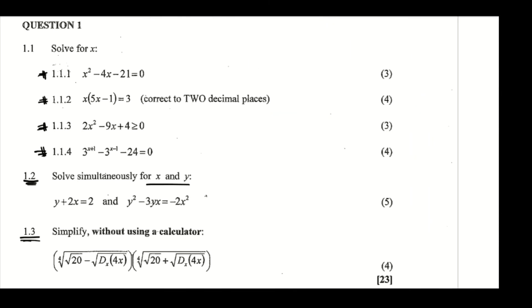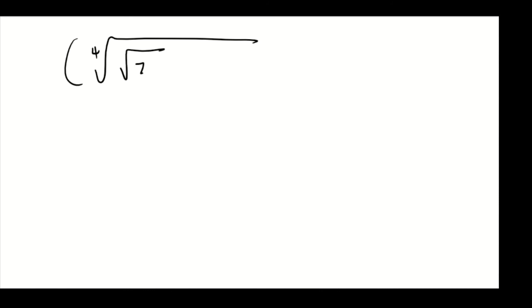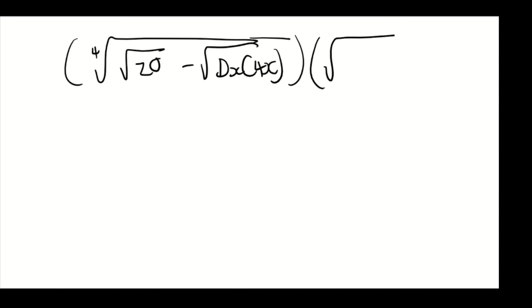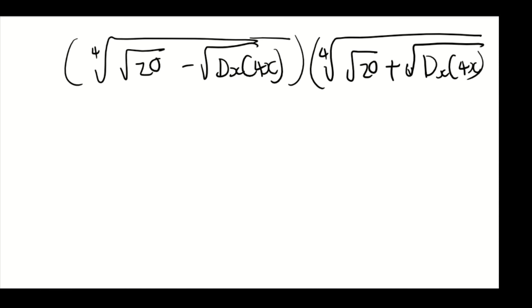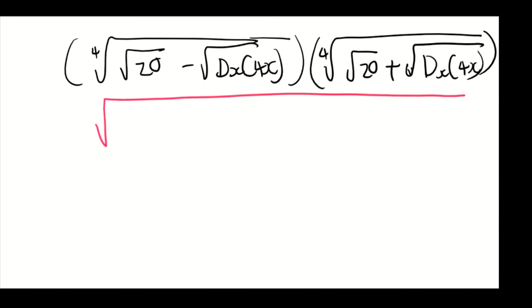For 1.3, we're going to simplify this problem without a calculator. Written properly, it's a fourth root of the quantity (square root of 20 minus square root of 4x), multiplied by the same expression with a plus sign: fourth root of (square root of 20 plus square root of 4x).